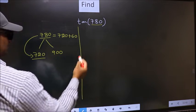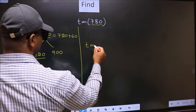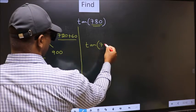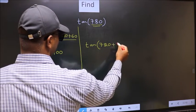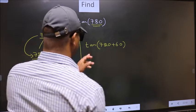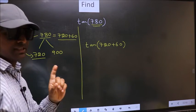So this will become tan. In place of this, we should write 720 plus 60. This is your step 1.